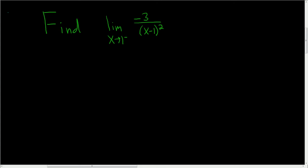We're being asked to find the limit as x approaches 1 from the left of this rational function. Let's go ahead and work it out. We'll start by drawing a picture. Here's 1, and we're approaching 1 from the left — that's indicated by the little minus sign here.